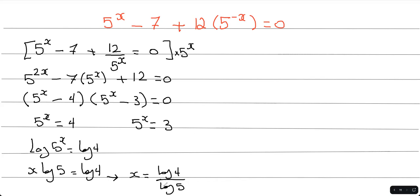You could put this into your calculator if you want to find the decimal answer, but I'm just going to keep it in exact values. Now, let's go to this. We do the same thing, log both sides, bring the exponent down, and then divide both sides by log 5. You're going to get log 3 over log 5, and that's the second answer.